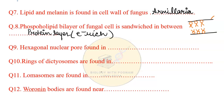The next question is: hexagonal nuclear pores are found in — the direct answer was already given. Next fill-in-the-blank is: rings of dictyosomes are found in — the direct answer is that they are found in Rhizopus.